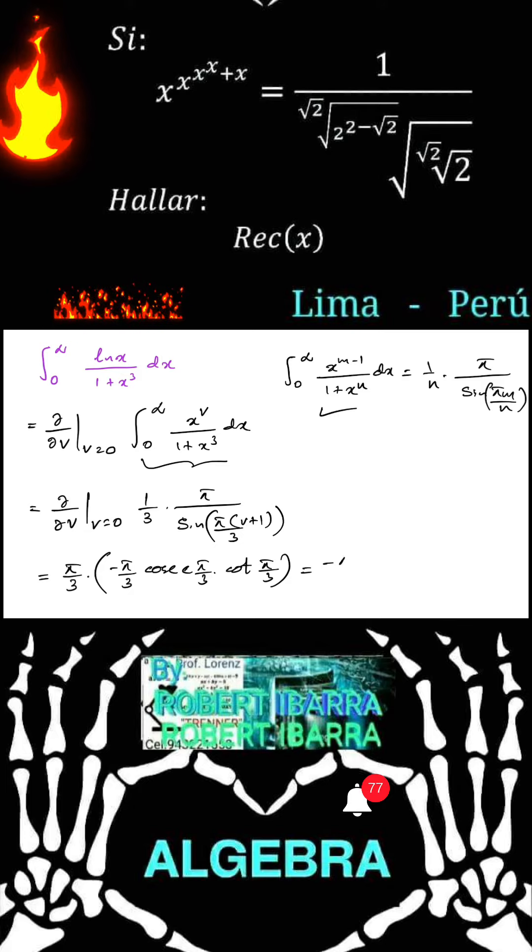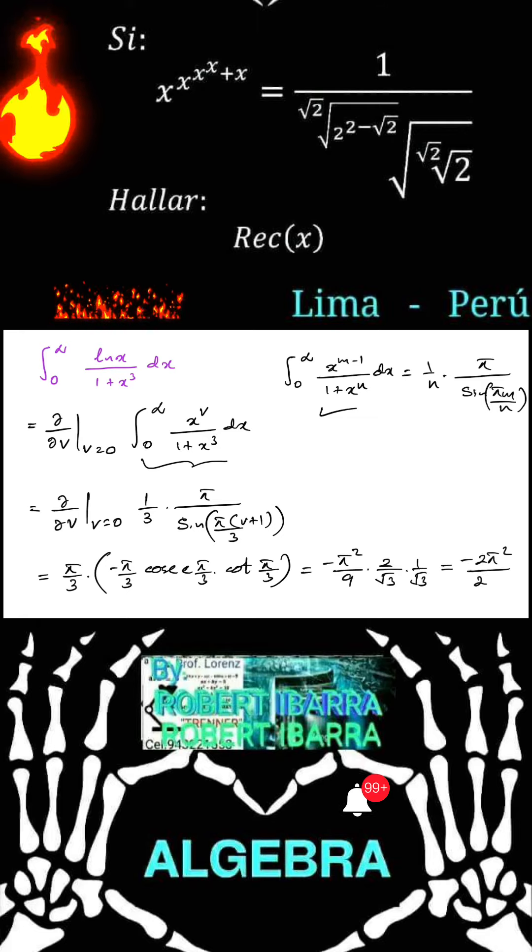Okay, here minus 5 square over 9 times cosecant of 5 over 3, 2 over square root of 3 times 1 over square root of 3. Then, if we simplify, minus 2 times 5 square over 27.